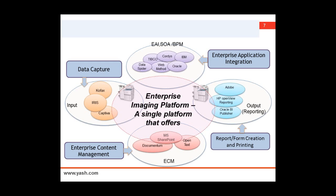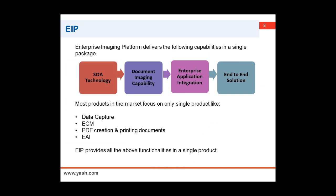EIP cuts across all these particular products and gives you a single platform with best-in-breed functionalities of these particular solutions. EIP is primarily based on SOA technology, has document imaging capabilities, and has enterprise application capabilities — meaning it delivers an end-to-end solution. Normally products are focused either on data capture, ECM, PDF creation, or application integration, whereas EIP offers a single platform with the functionalities of all these separate products in one.